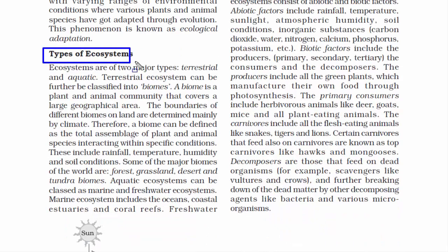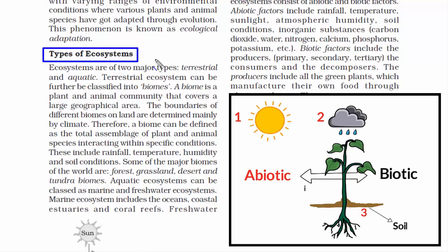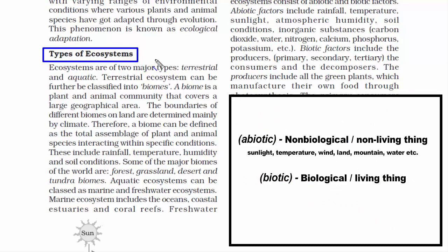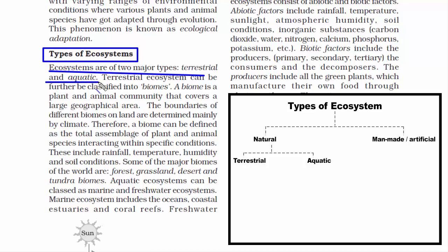Let's look at the Types of Ecosystems. Ecosystems are of two types: natural and man-made. Under the natural ecosystem, we have two types: aquatic and terrestrial. Aquatic ecosystem can be classed as marine and freshwater ecosystems. A marine ecosystem includes the oceans, coastal estuaries and coral reefs. A freshwater ecosystem includes lakes, ponds, streams, marshes and bogs. A terrestrial ecosystem can be further classified into biomes.